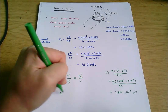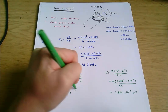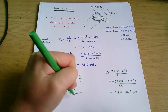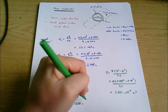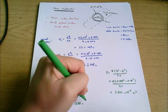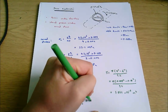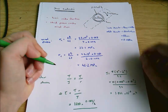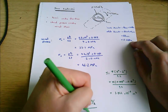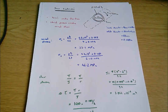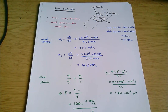Putting that into a calculator, J comes out to be 1.866 times 10 to the minus 6 metres to the 4. We want to calculate the shear stress tau, so we get tau equals T times R all over J, which equals 1600 times 0.088 divided by 2 — we're looking for the maximum shear stress, which will be on the outside wall, so that's the outer radius — all divided by 1.866 times 10 to the minus 6. That gives 37.7 megapascals.